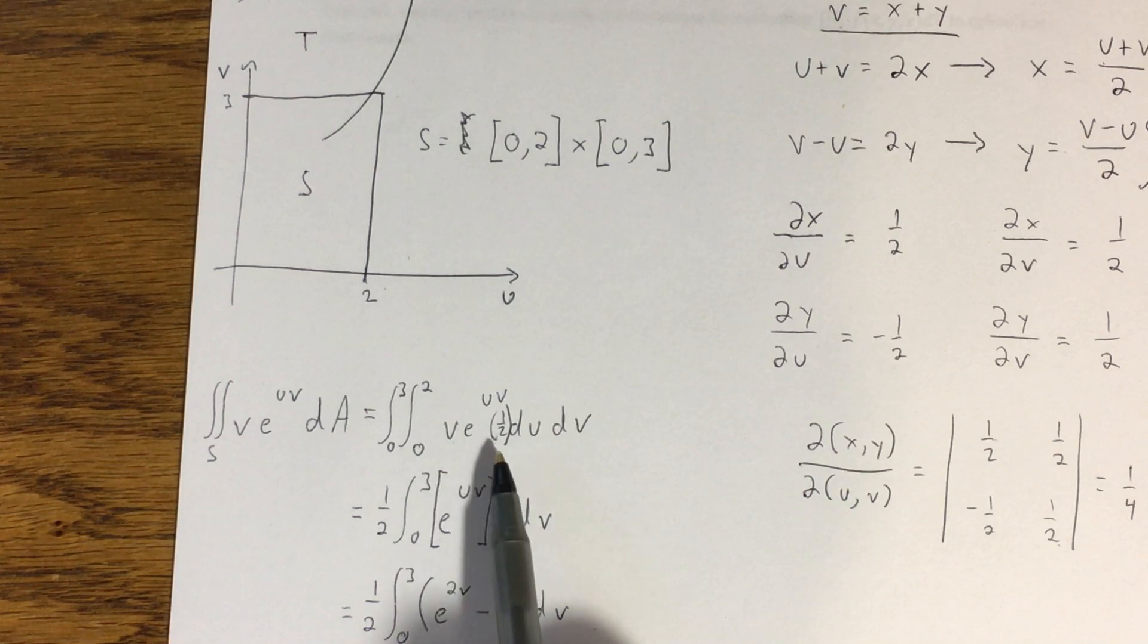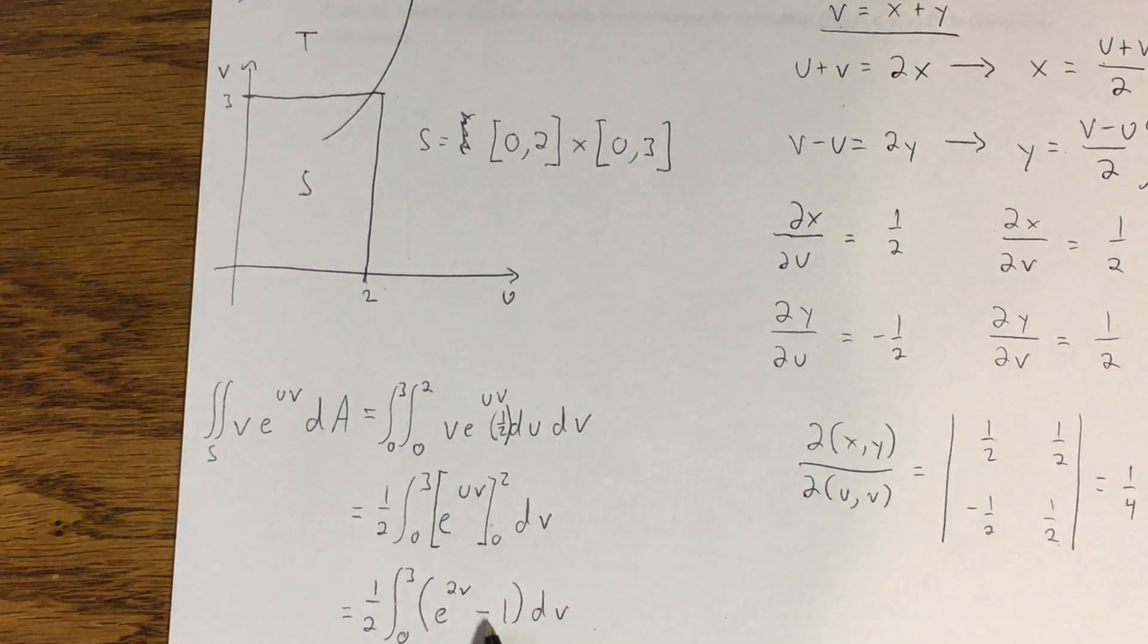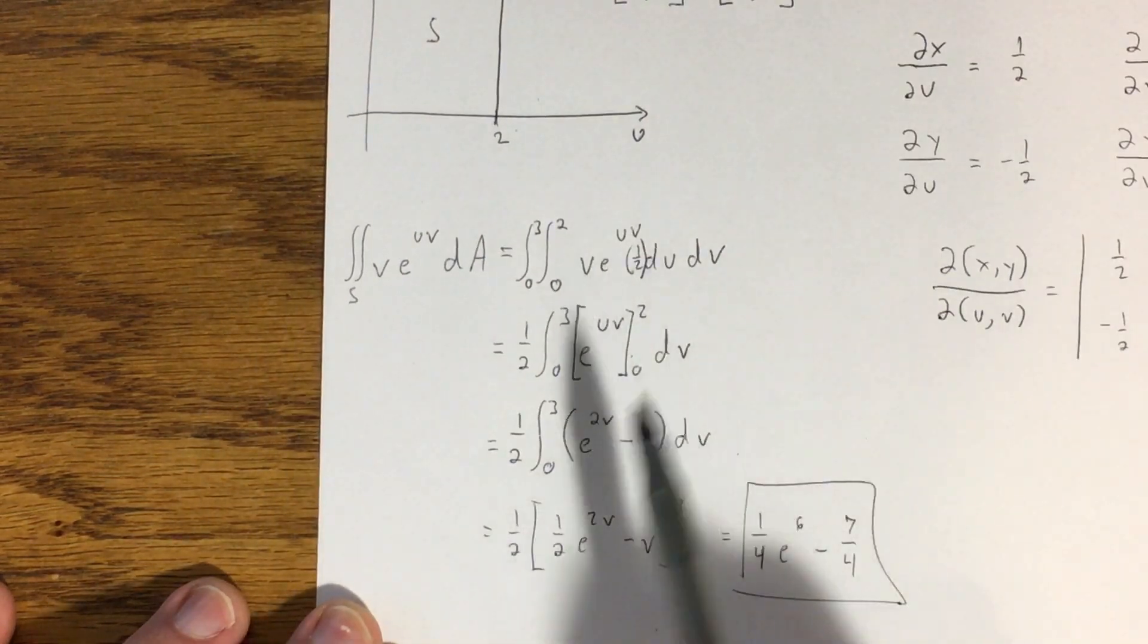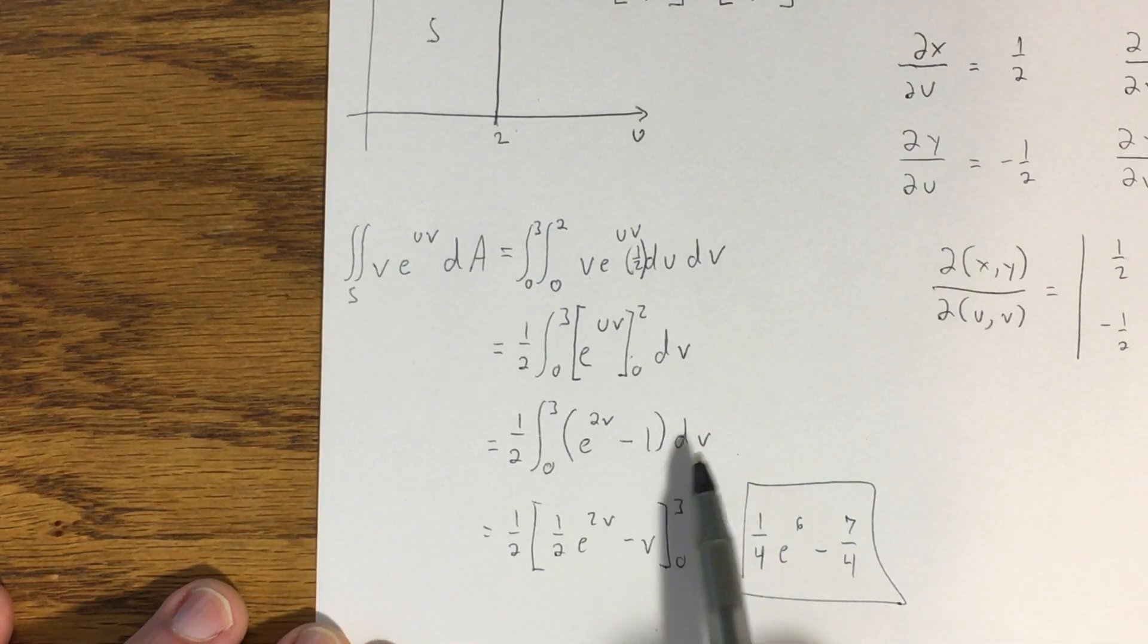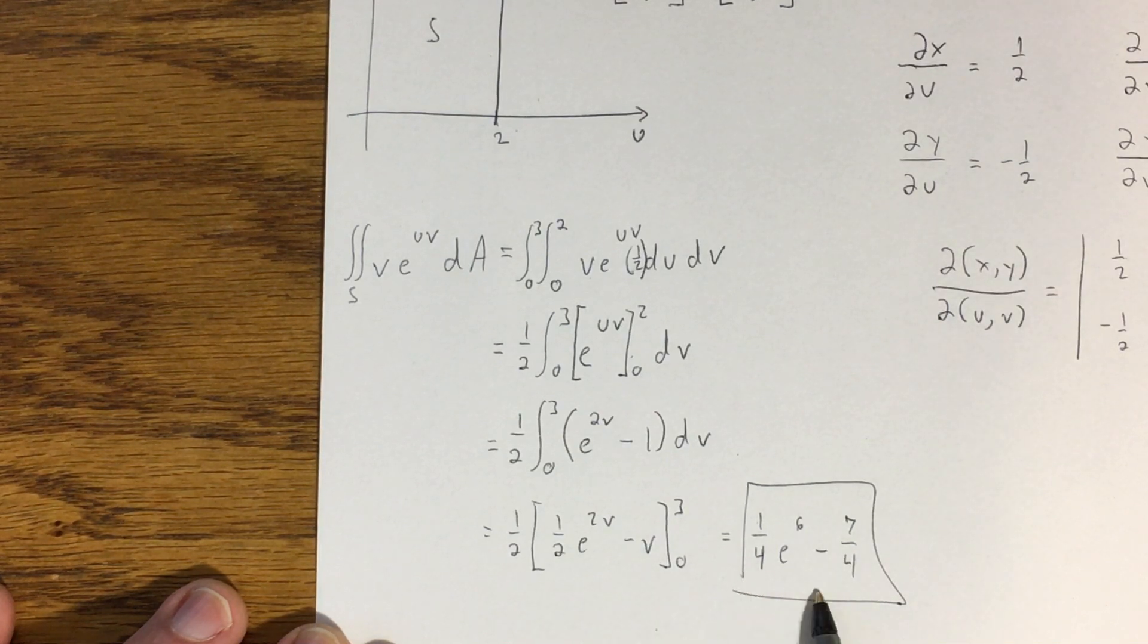And then if we look at what happens here, integrating this with respect to U gives me E to the U-V evaluated from 0 to 2, which gives me this integrand right here, E to the 2V minus 1 after evaluating those. Then we integrate again with respect to V, giving me this, which simplifies the 1 fourth, E to the 6th minus 7 fourths.